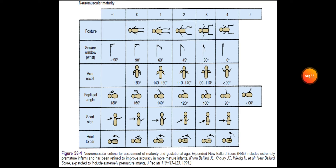The scarf sign refers to moving one arm across the chest to touch the opposite shoulder. As seen in the picture: straightish position is negative one point. Able to flex it slightly is zero points. Able to flex it completely is one point. Flexed a bit less with more movement is two points. As shown in the picture, three points and four points follow progressively.